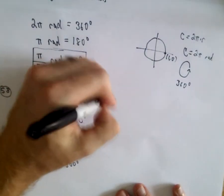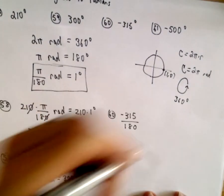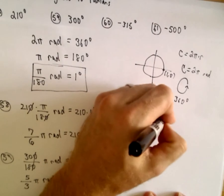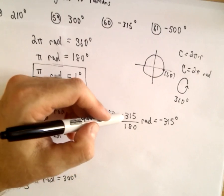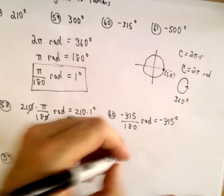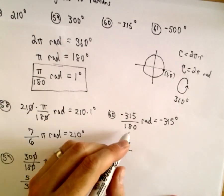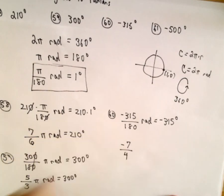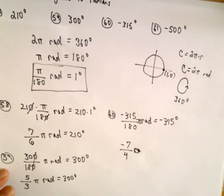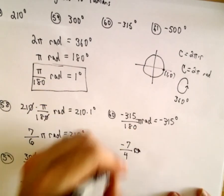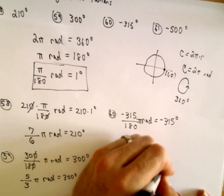Two more here. So number 60, if we multiply both sides by negative 315, 45 will go into both of those numbers. Let's see, 45 will go into negative 315 seven times. I should say negative seven times. And 180 divided by 45 will be 4. So we have negative seven divided by 4. I left my pi out. Sorry about that. Got in a hurry. Definitely need the pi in there. So negative seven over 4 pi radians. That's going to be equal to negative 315 degrees.